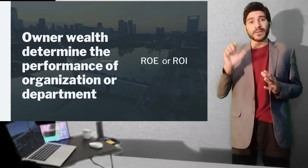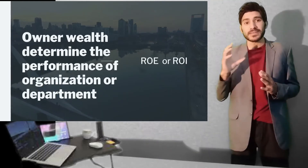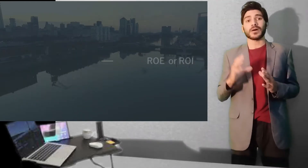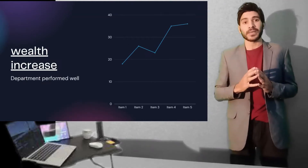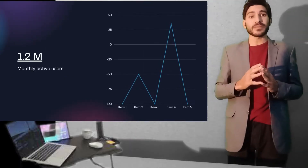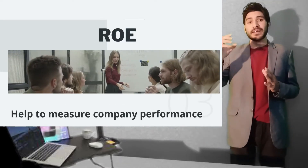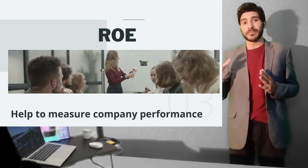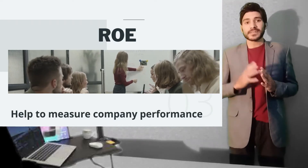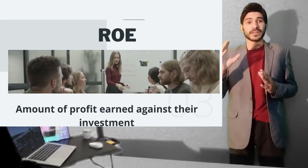On the basis of owner equity — on the basis of owner wealth — we can determine how that organization or department has performed. If wealth has increased, the department or organization has performed well. If the wealth of the owner has decreased, that means their department and organization have not performed well. In business or accounting terms, we call this wealth as return on equity.